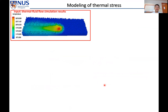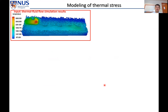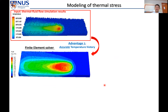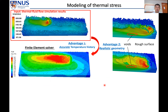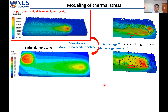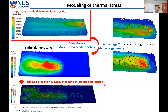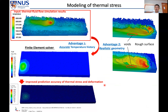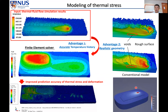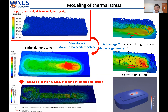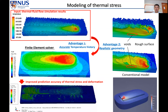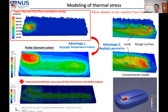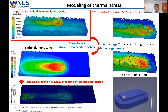We developed a model for thermal stress where we input thermal-fluid-flow simulation results into a finite element solver. The advantages are that we can incorporate an accurate temperature profile and also realistic geometry including voids and roughness, so prediction accuracy is much better than conventional models, which assume perfectly flat surfaces without voids and use less accurate temperature profiles. More details can be found in my student Fenton's talk.